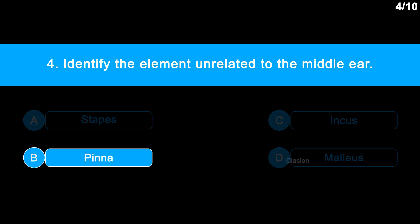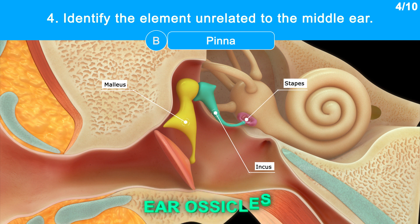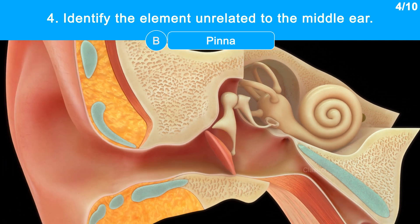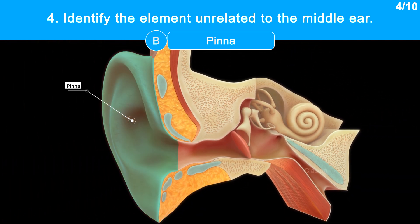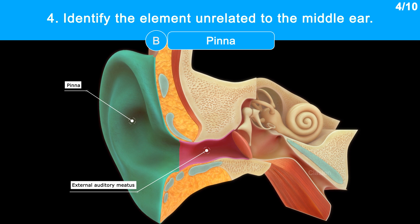The correct answer is option B, pinna. The malleus, incus, and stapes are three of the tiny bones called ear ossicles that make up the middle ear. The pinna and external auditory meatus make up the external ear.